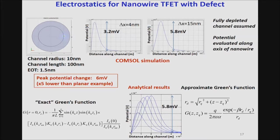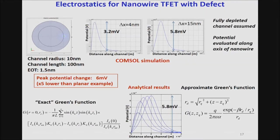Considering defects in the nanowire, electrostatic simulations assuming a depleted channel show that the variations in potential at the center of the channel are only 6 millivolts for this geometry — five times less than for the planar double-gate structure. The cylindrical geometry therefore significantly reduces the impact of interface charges while maintaining electrostatic control, even with somewhat larger dimensions.